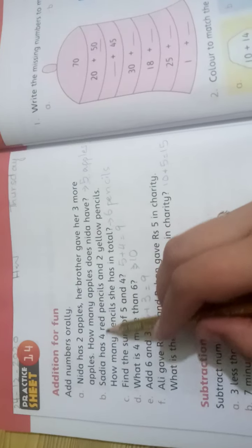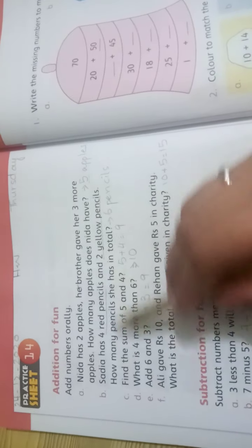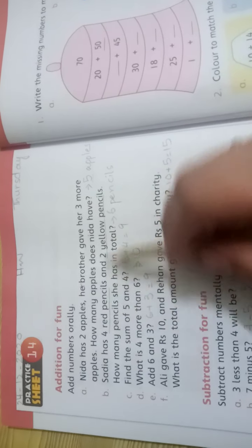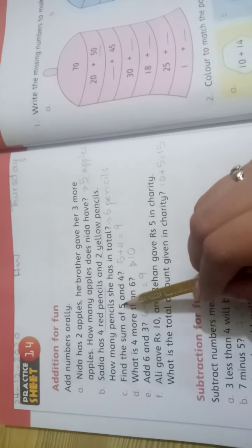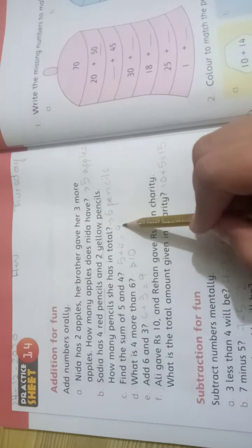Find the sum of 5 and 4. Sum means add: 5 plus 4 is 9. What is 4 more than 6? 6 plus 4: 6, 7, 8, 9, 10. So 10 is the answer.